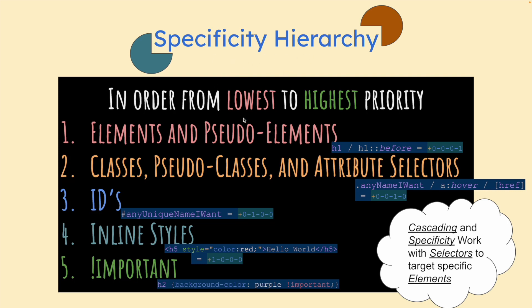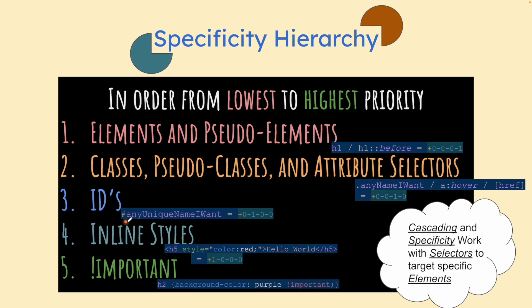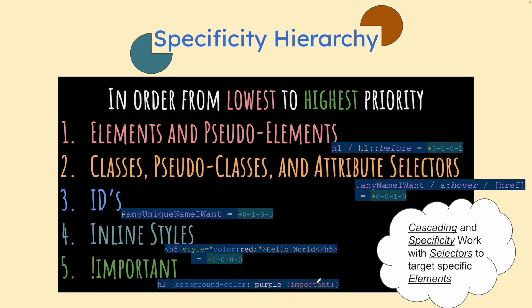We're going to have a similar conversation about specificity. Specificity hierarchy references lowest to highest priority of overriding things. So aside from cascading, which talks about all else being equal, this makes things unequal. You've seen elements, pseudo elements, classes, pseudo classes, attribute selectors, IDs, inline styles, and the important add-on in the last cascading video.